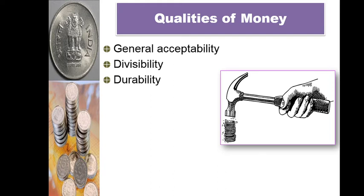In contrast, currency notes — that is paper money — and all metallic coins are used repeatedly and shall continue to do so for years together on account of durability. Currency notes and coins are being used repeatedly and shall continue to do so for years together on account of durability, meaning you can use them many times.